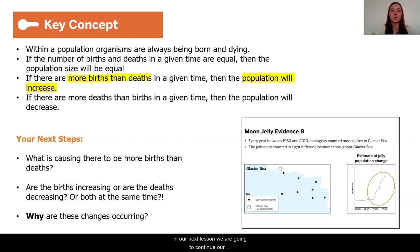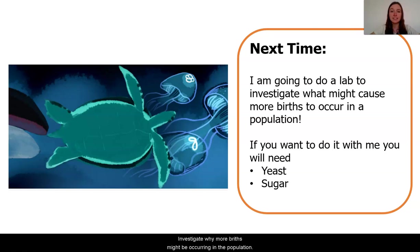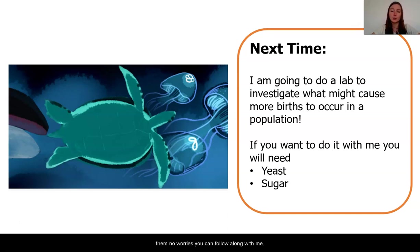In our next lesson we are going to continue our investigations to get more details about what is going on in our moon jelly populations. Next time I'm going to be doing a lab investigation to investigate why more births might be occurring in the population. If you want to do it with me, the items that you'll need are yeast and sugar — both of these might be lying around your house or are really easy to find at local grocery stores. If you don't have the materials, no worries, you can follow along with me. I'm really looking forward to our next lesson and to continue learning with you. Bye!